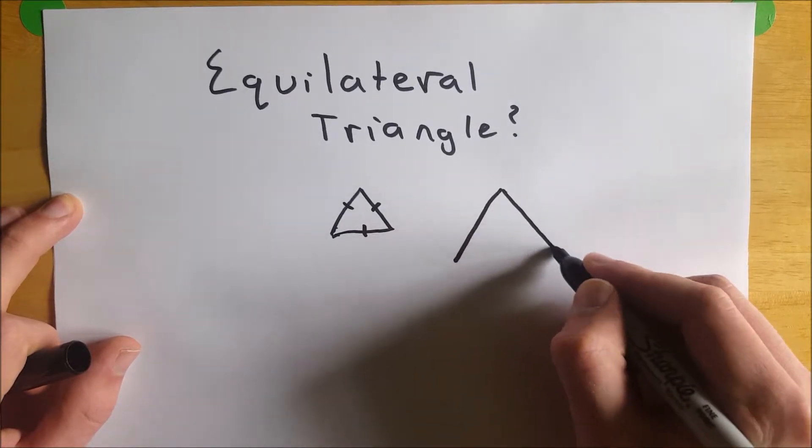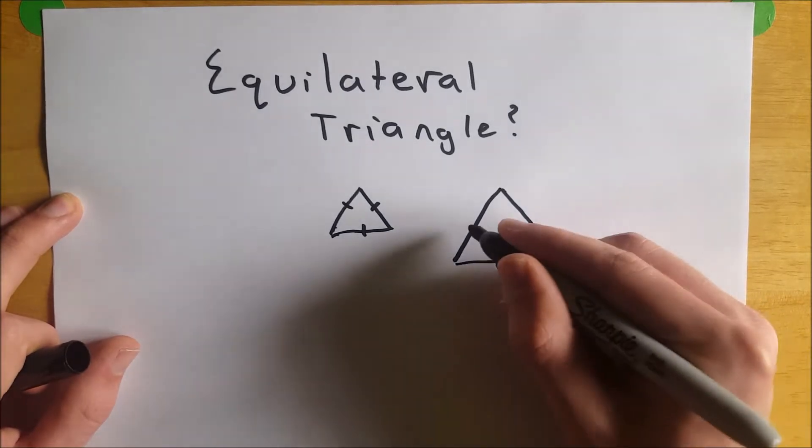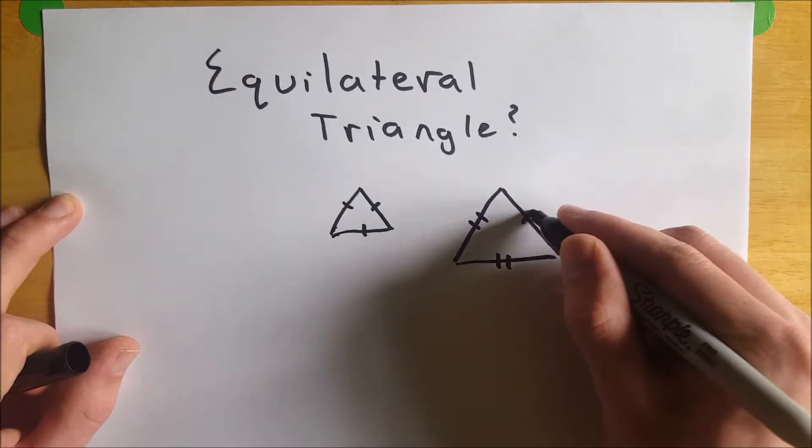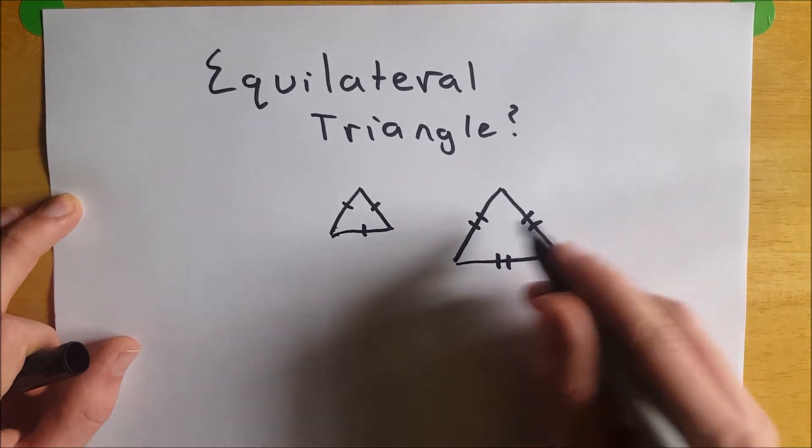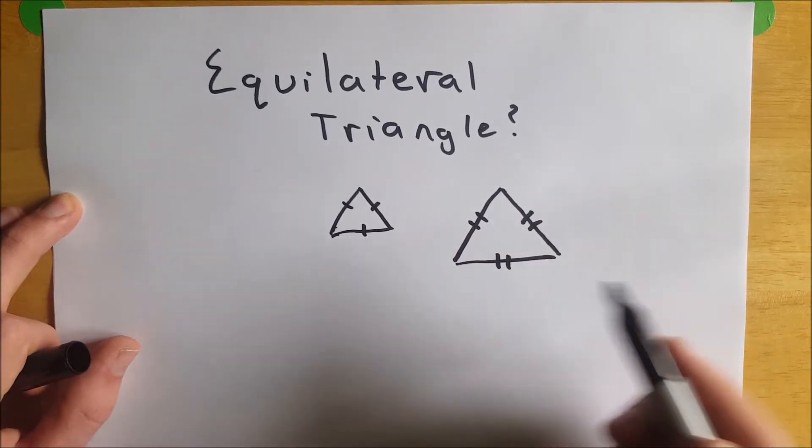If we're working with multiple triangles, you might see this denoted with two hash marks to denote equal sides of a different length. That is to say, all of these sides are equal, however this side is not congruent to this side.